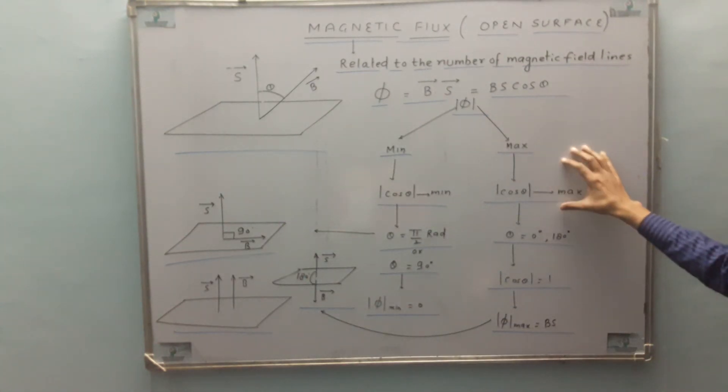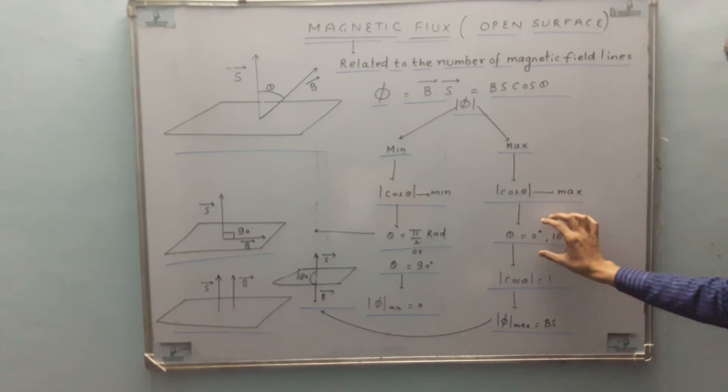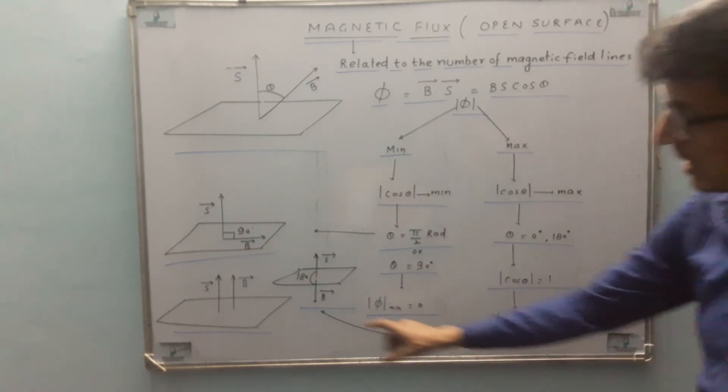And it is maximum when mod of cos theta is maximum which is possible for either theta is 0 or 180, that is mod of cos theta will be 1. And the maximum value of flux will come out to be BS.